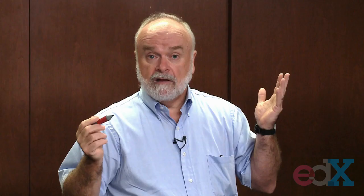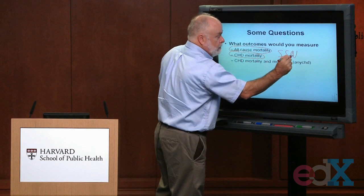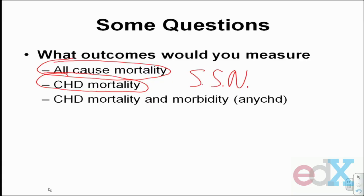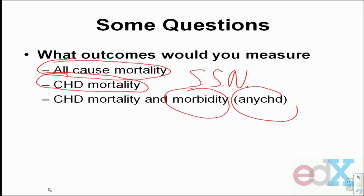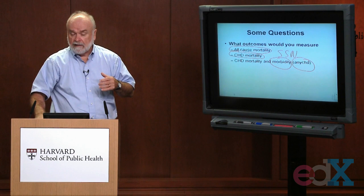That information is readily available in this country. If you know a person's social security number, you can go to the Social Security web page, type in that number, and find out whether a death certificate has been filed and what the cause of death was. So mortality — even cause-specific mortality — can be tracked without calling people or having them fill out questionnaires. If you're interested in morbidity, however, you need people to be examined or fill out questionnaires. In the data set, you have a variable called NECHD, which we've been using as an outcome variable reflecting both mortality and morbidity related to coronary heart disease.